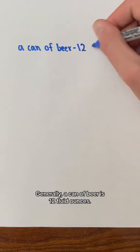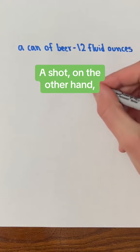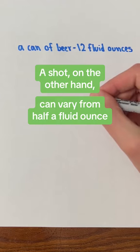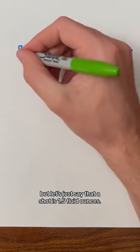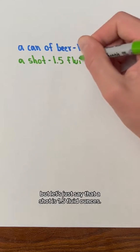Generally, a can of beer is 12 fluid ounces. A shot, on the other hand, can vary from half a fluid ounce to 3 fluid ounces, but let's just say that a shot is 1.5 fluid ounces.